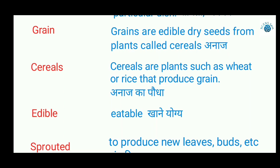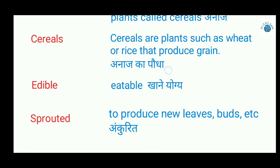Edible means eatable — that which is easy and suitable to eat. In Hindi, it is called khaane yogya. Sprouted: sprouting is a process to produce new leaves, buds, or germination of other plants. In Hindi, the meaning is ankurit.